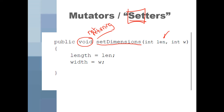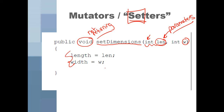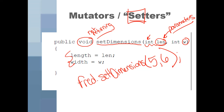The mutator is called setDimensions. Notice it has parameters this time because I need to know what to change length and width to. These parameter names can be whatever you want — I used int len and int w. You need a data type since these are actual variables. Then I assign my instance variables equal to those parameters. So if I said Fred.setDimensions(5, 6), five would go into len then into the length instance variable, and six would go into w then into width.